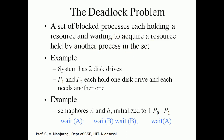In a deadlock, there is a set of blocked processes — each holding a resource and waiting to acquire a resource held by another process in the set. Two or more processes are in the waiting state, already holding some resources, and waiting to acquire resources held by other processes. Indefinitely, the processes remain in the waiting state and their state is never going to change.